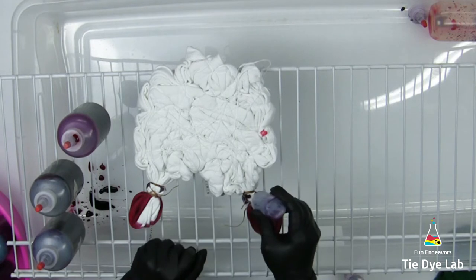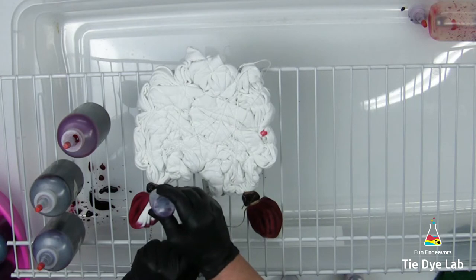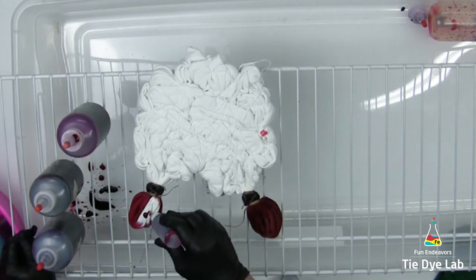Now I'm going to turn the shirt over and dye the back side. I'm flipping the shirt this way, though, so that I don't get red on the pink heart and pink on the red heart.